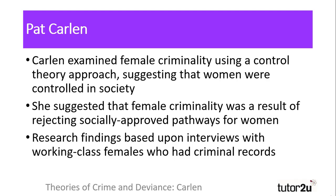Carlin's research selected women who had turned to criminality for various reasons, suggesting that there existed barriers for the women to have followed the legitimate pathways that society set out for them. The women she interviewed had criminal records; some had been brought up in care, whilst most had experienced poverty. For these reasons, Carlin suggested that they were destined for criminality, as they had no other options.